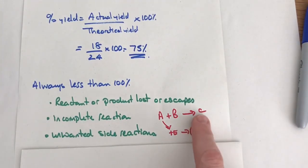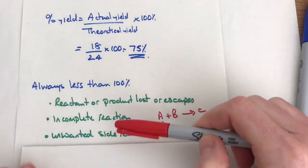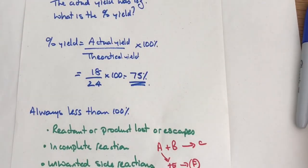So those are three reasons why the percentage yield is always less than 100.